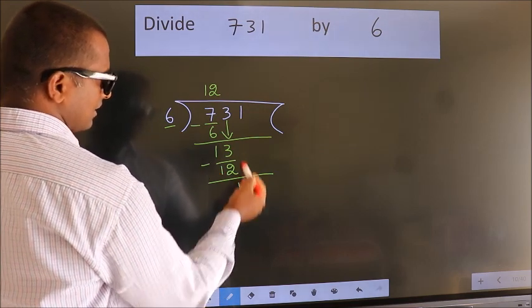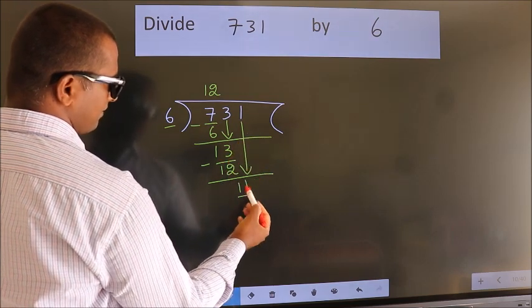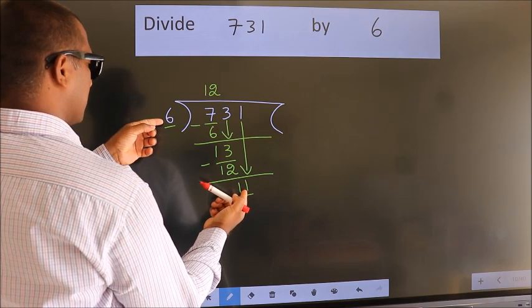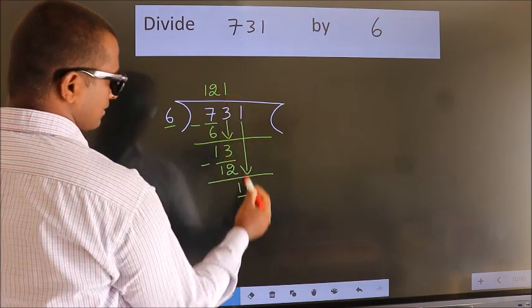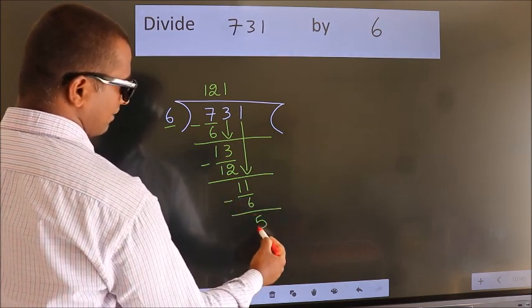After this, bring down the beside number. So 1 down. So 11. A number close to 11 in 6 table is 6 1s 6. Now we subtract. We get 5.